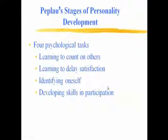Continuing on, we'll be talking about Peplau's stages of personality development. According to Townsend, psychological tasks are developmental lessons that must be learned on the way to achieving maturity of the personality. Four psychological tasks identified are: learning to count on others, learning to delay satisfaction, identifying oneself, and developing skills in participation.